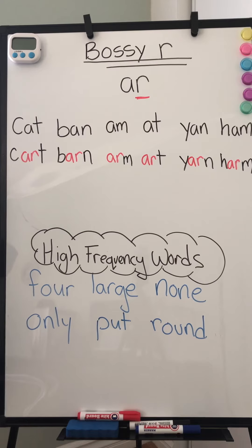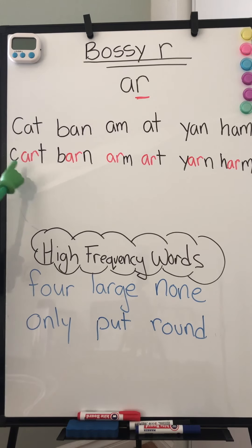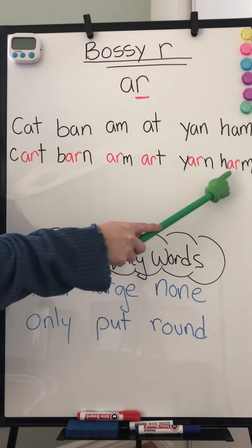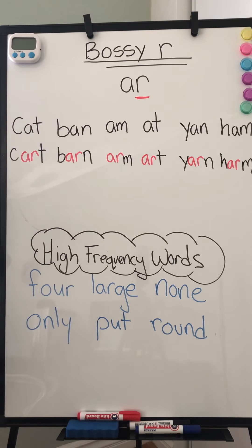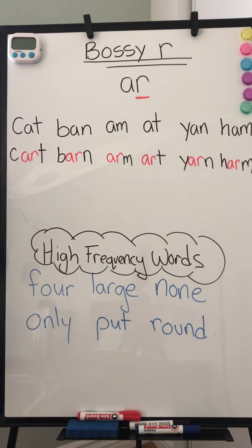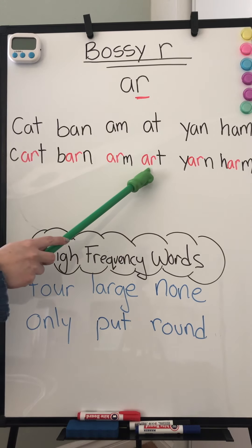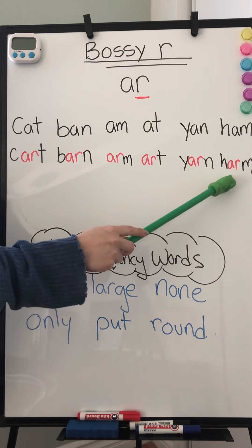So today, these are the words we're going to be looking at. Bossy R takes over with the other vowels too — like the A, the I, the E, the O, and the U — but today we're only going to look at the A. So we're going to focus on words that have A-R. When you see A-R, that bossy R is going to take over and we're going to hear the sound R. Give me your best R sound. Let's read them one more time: cart, barn, arm, art, yarn, harm.